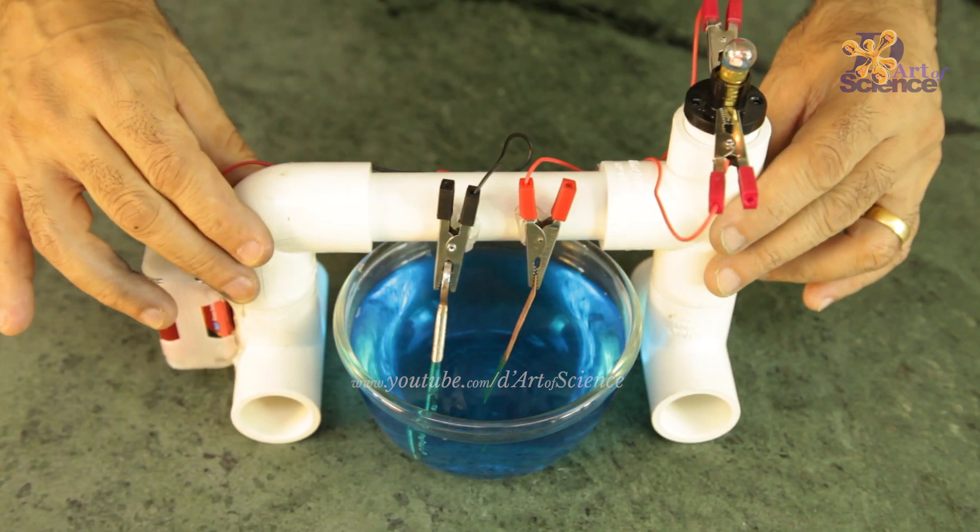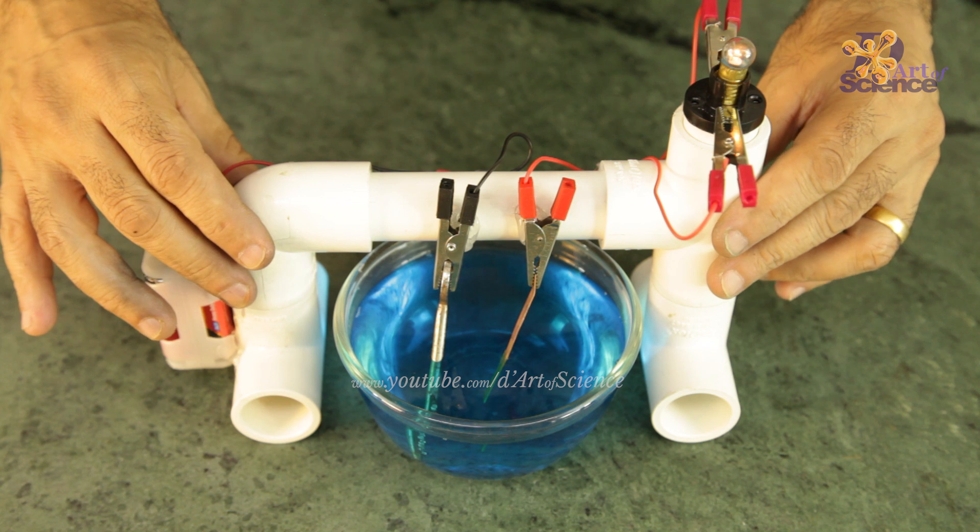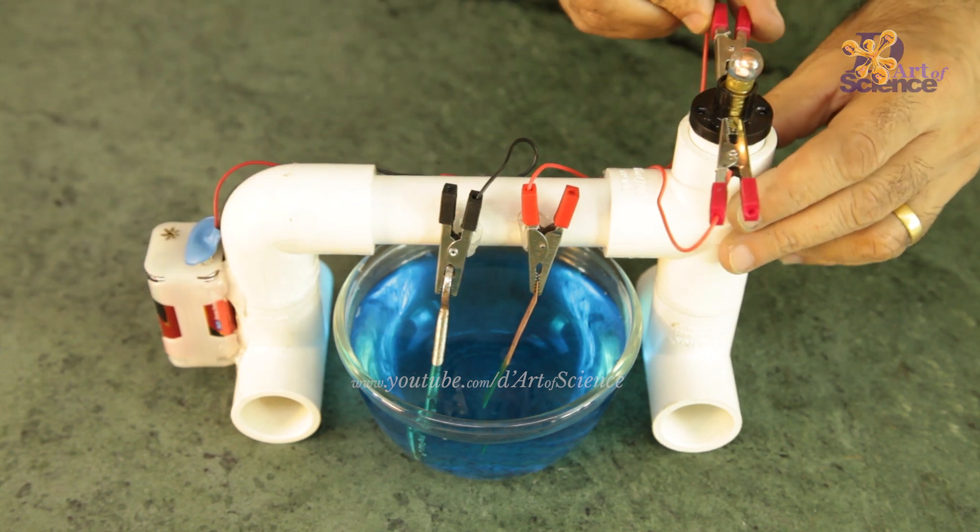While electroplating, using this example of copper plating, the following is important. The metal which will be the coating, or the plating, or the final top surface, needs to be the anode, and therefore connected to the positive terminal of the battery.